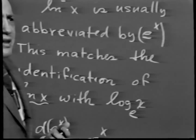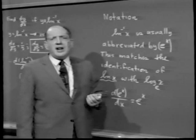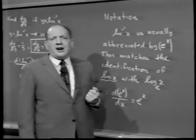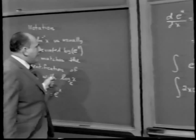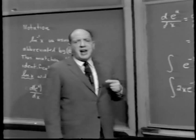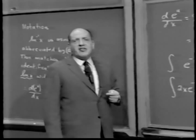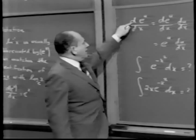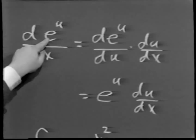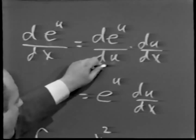The rest of today's lecture will go fairly quickly, because once we've established what function we're talking about, every other property follows from principles we've already learned. In terms of our new notation, since the derivative of e to the x with respect to x is e to the x itself, if u is any differentiable function of x, by the chain rule the derivative of e to the u with respect to x is e to the u times du/dx.